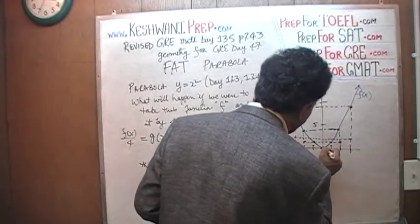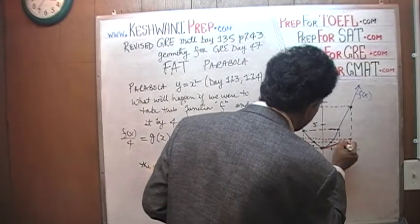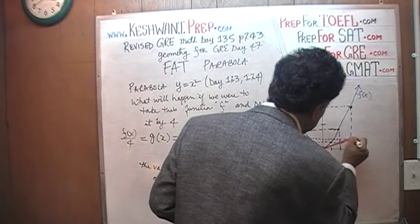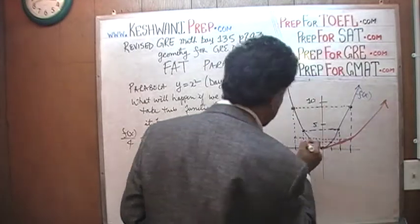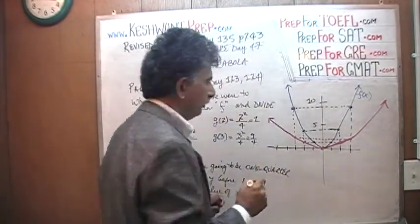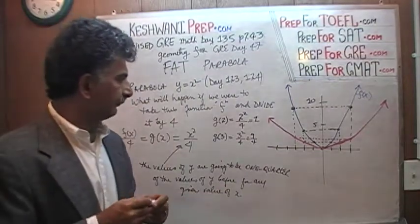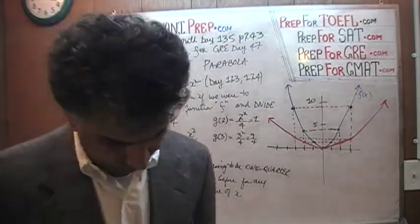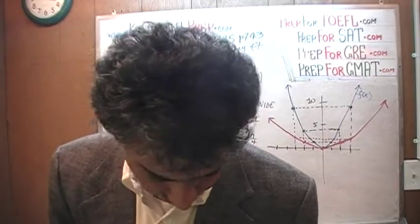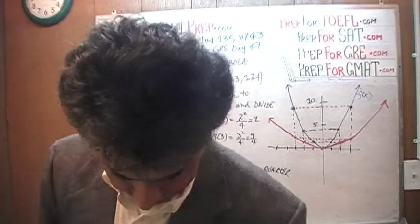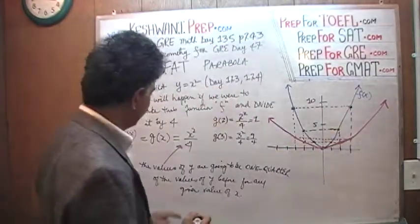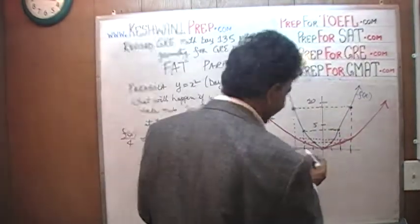Let's join those points. This new graph — the red one — has gotten fatter. The blue one was f of x, and the new red one is what we're calling g of x.